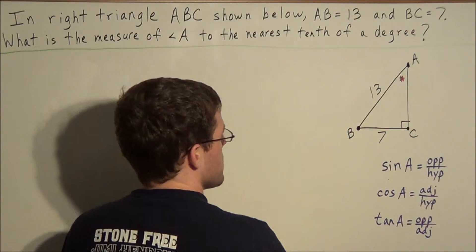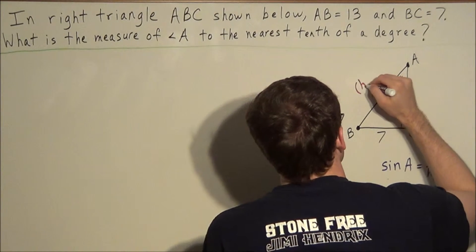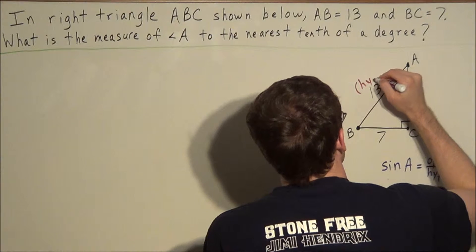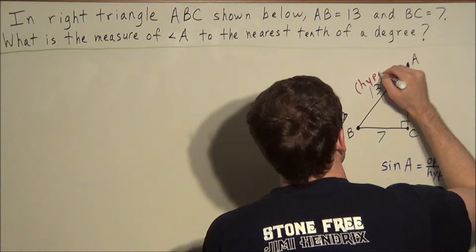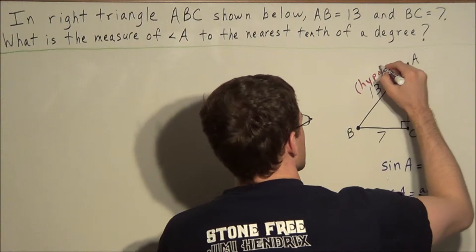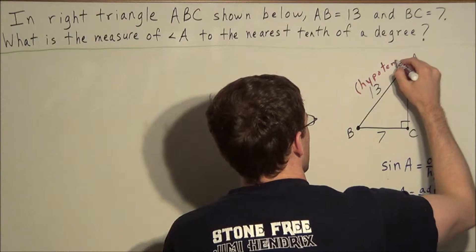This side here, AB, is the hypotenuse of this right triangle, and the way that we can identify this as the hypotenuse is we notice that it's opposite the right angle. So we know that this is our hypotenuse.